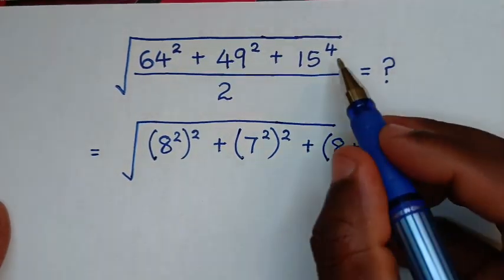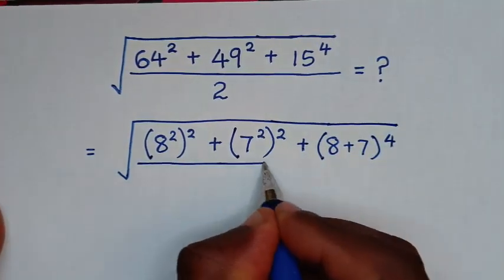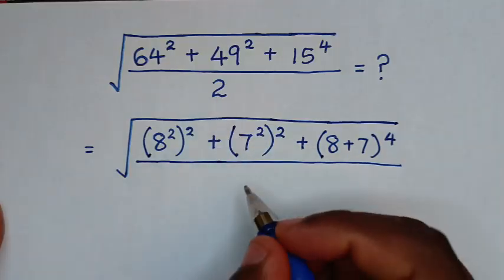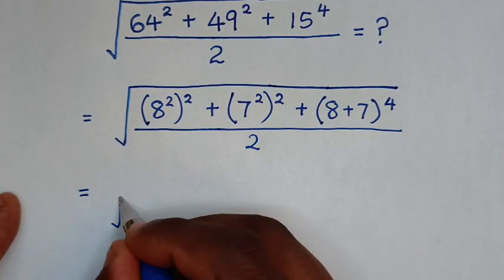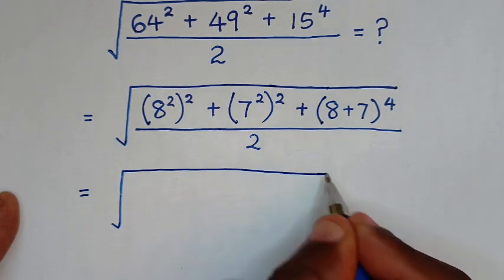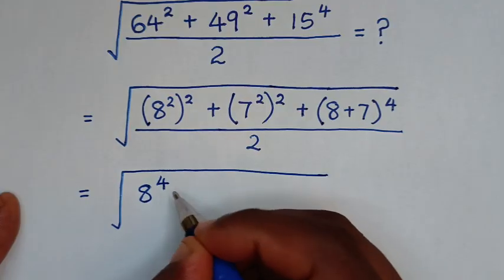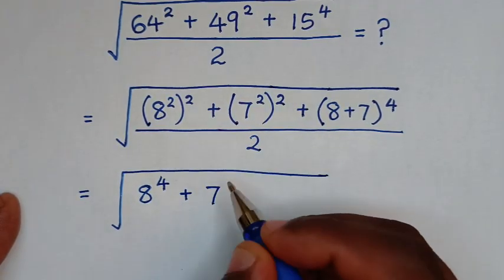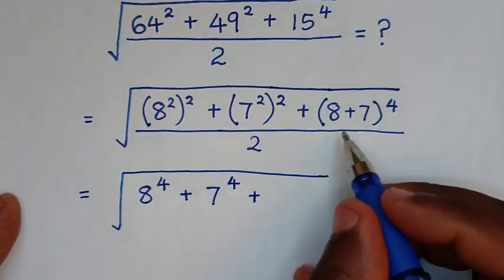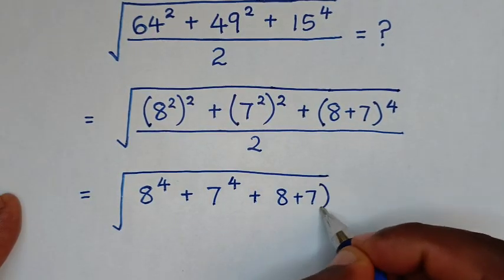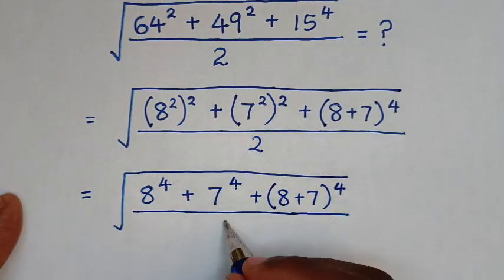Then bracket this to the power of 4, over 2. In the next step, it will be equal to the square root of 8 to the power of 4, plus 7 to the power of 4, plus (8 plus 7) bracket to the power of 4, over 2.